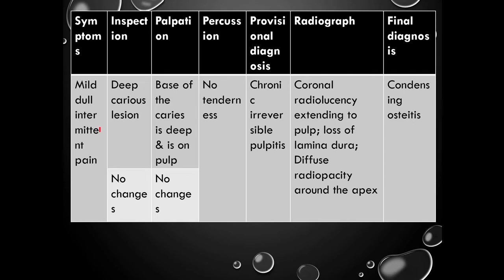The next patient may present with mild dull intermittent pain. No soft tissue changes on inspection or palpation. On hard tissue, a deep carious lesion is seen which is not tender on percussion. Provisional diagnosis is again chronic irreversible pulpitis. But on radiograph, you can see loss of lamina dura with diffuse radio-opacity around the apex. Unlike the previous lesions, here you can see radio-opacity instead of radiolucency, and this is suggestive of condensing osteitis.